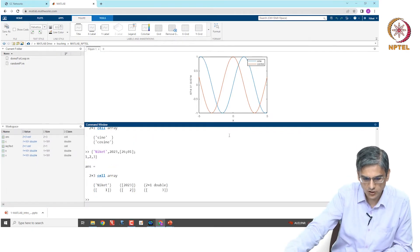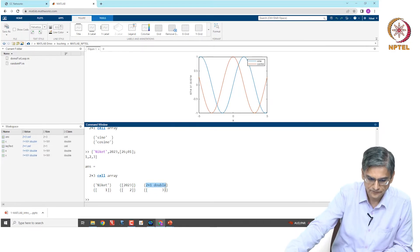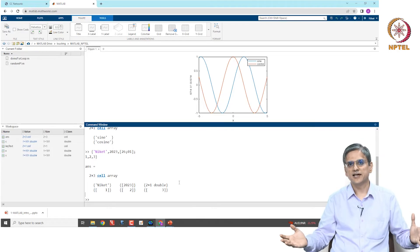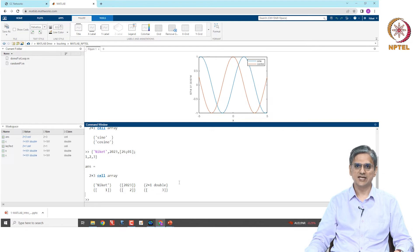What do we have? Now, we have a 2 row, 3 column cell array, where the first guy is a string, the second guy is just a number, the third guy is a 2 cross 1 vector, one more number, one more number, and one more number. You have mixed data types within a cell array, and that is one of the beauties of using cell array.